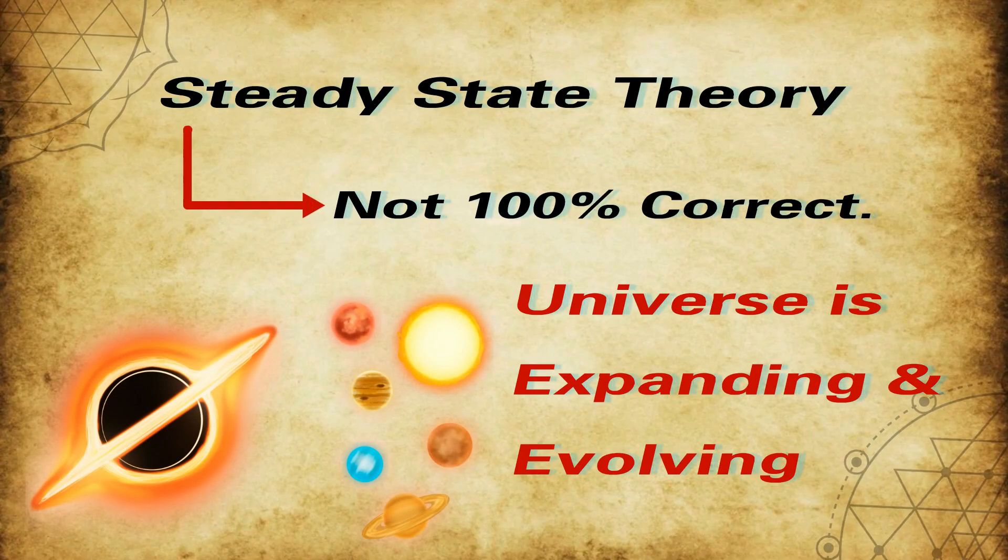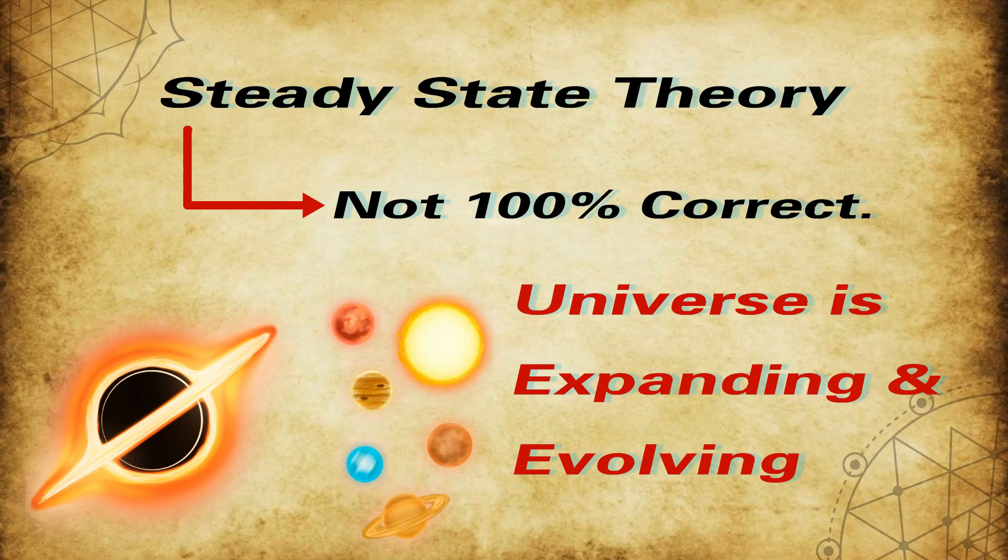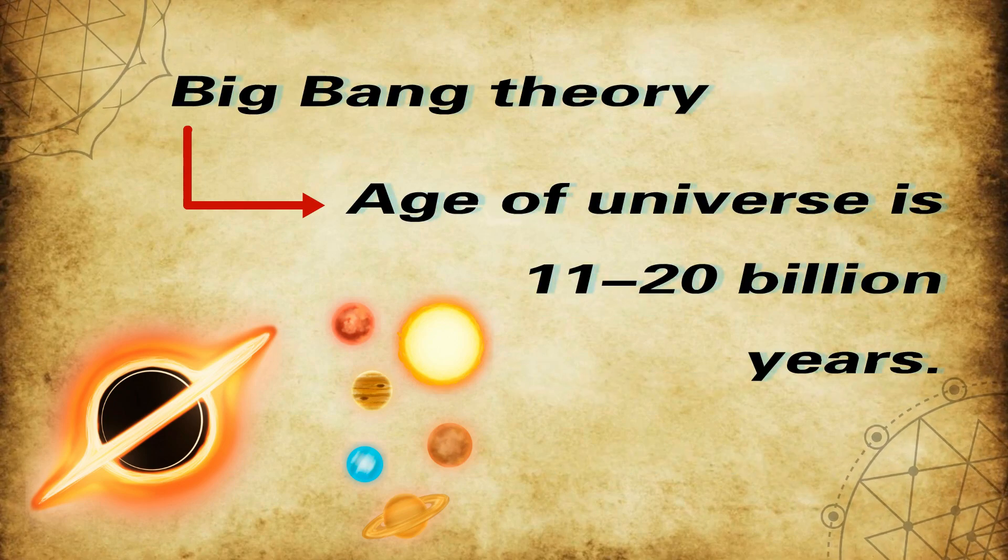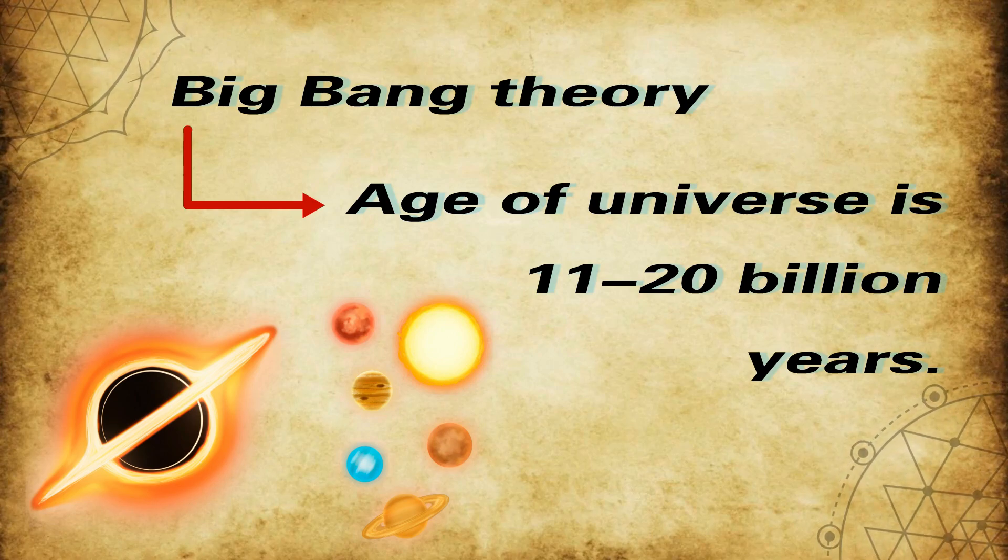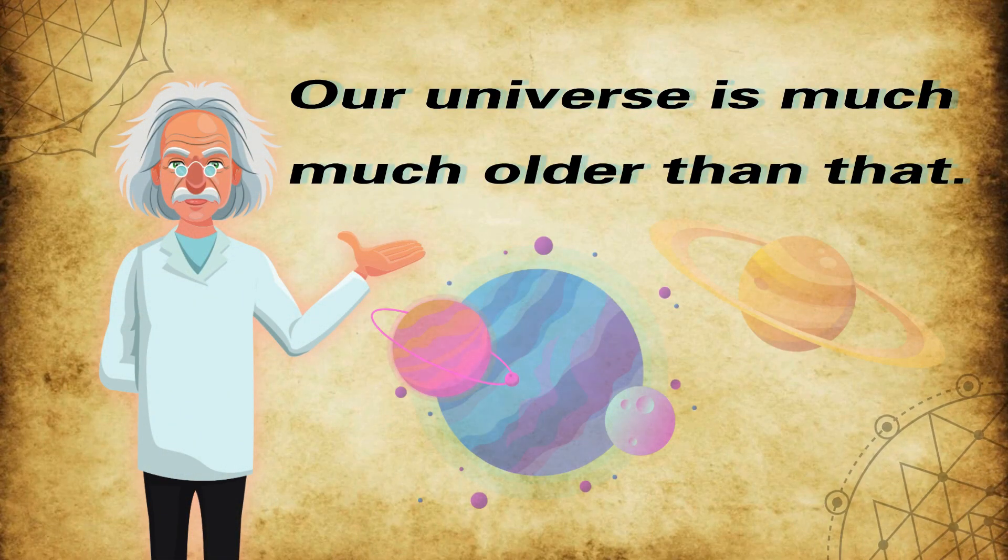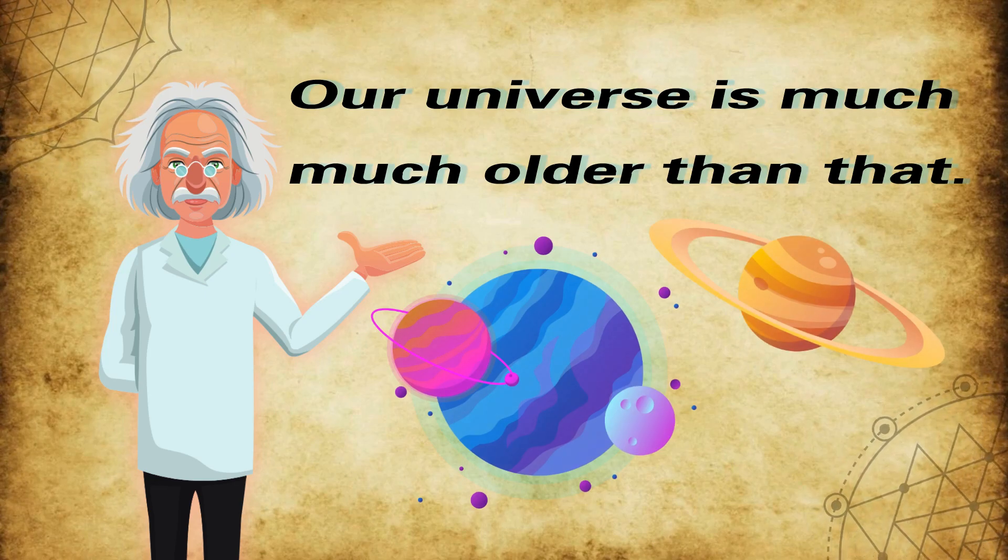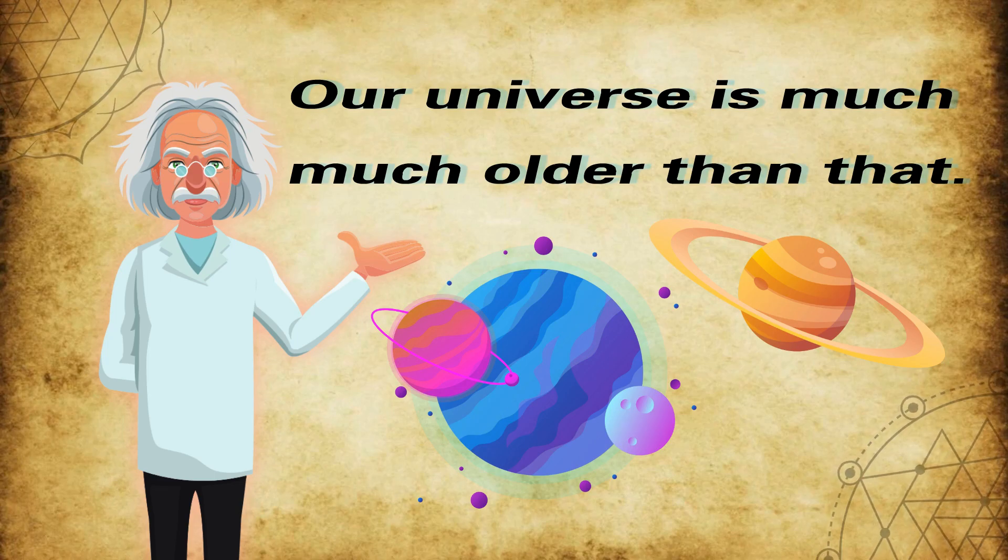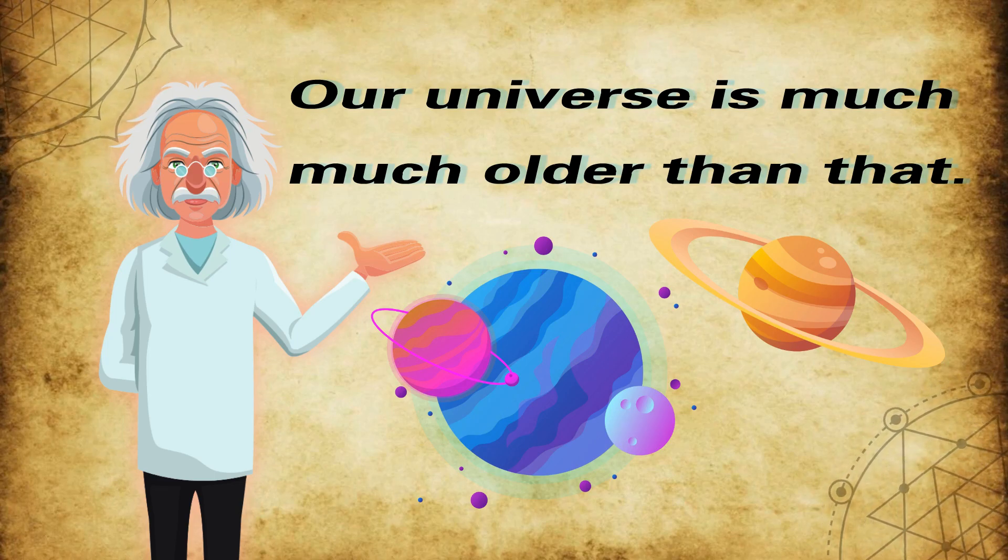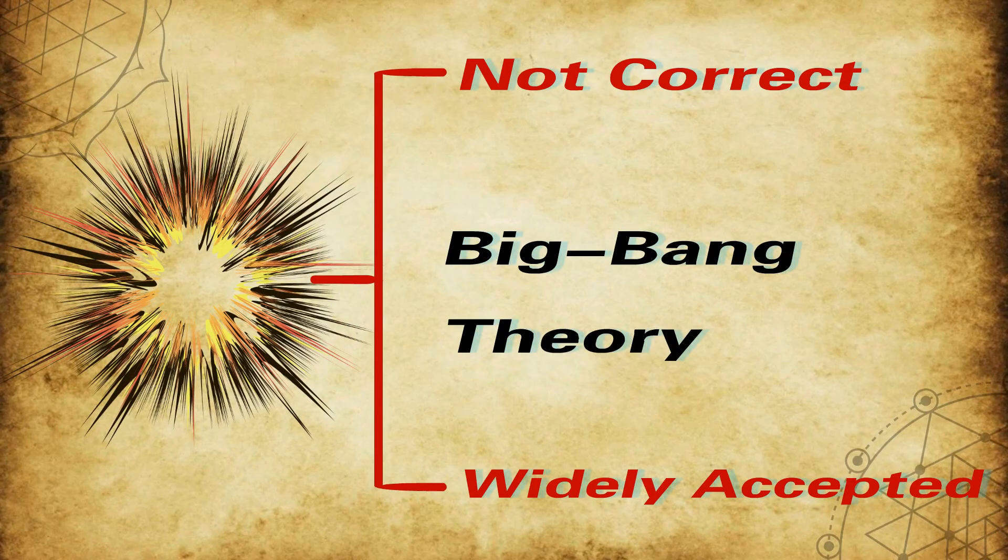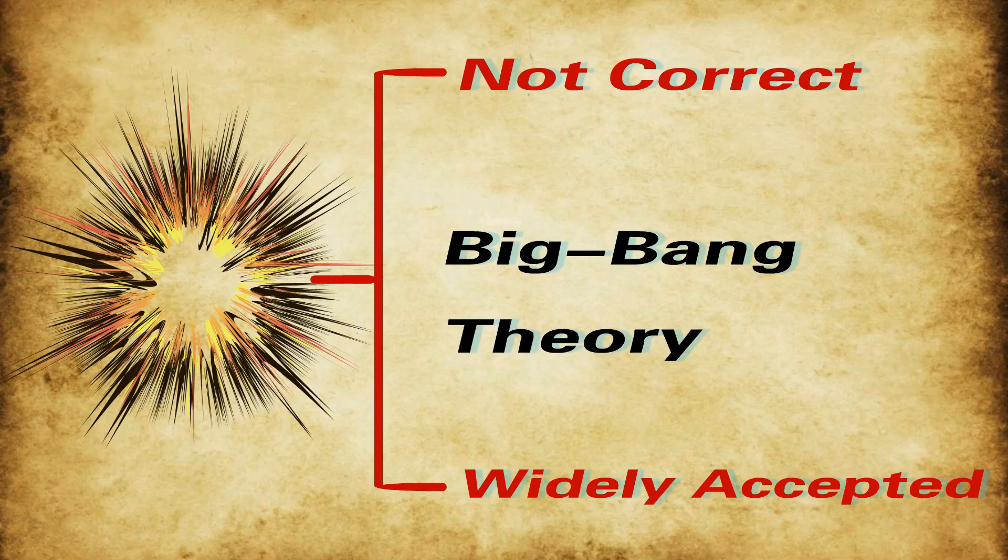Since the universe is expanding and evolving, the first theory is not 100% correct. Big bang theory says that the current age of the universe is 11 to 20 billion years. But according to new observations, that is clusters of galaxies and super clusters, it is quite evident that our universe is much older than that. Lots of cosmologists believe that big bang theory is not correct, although it is most widely accepted.